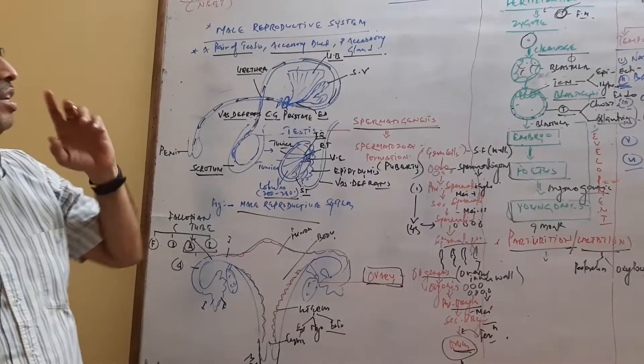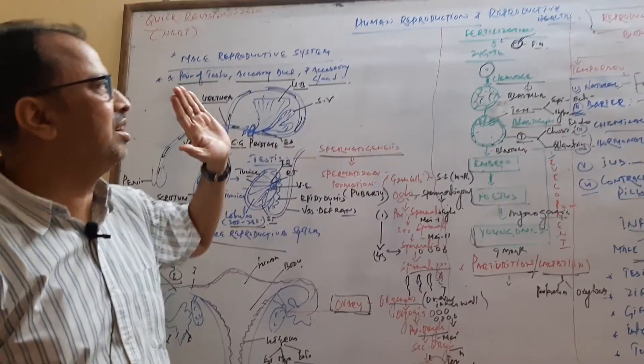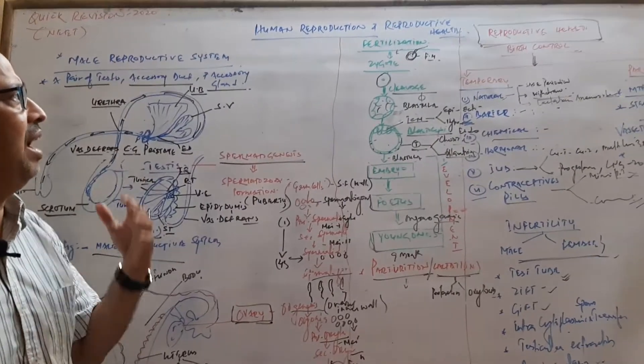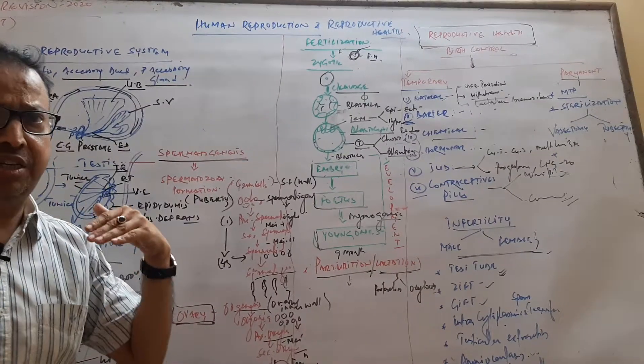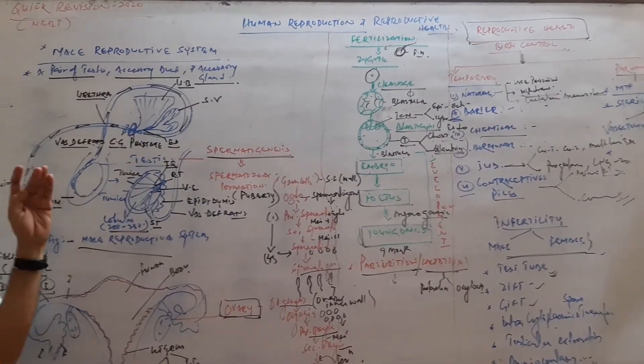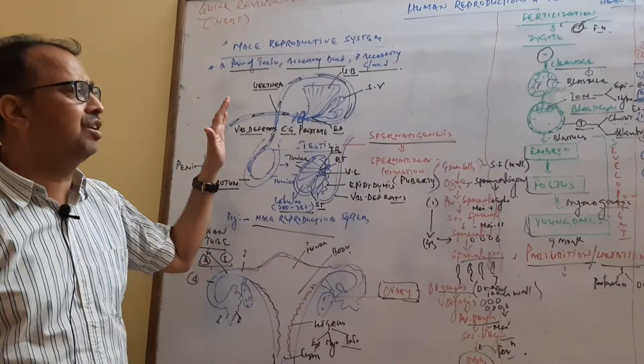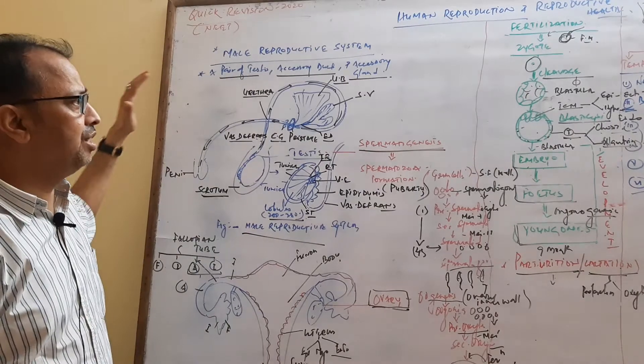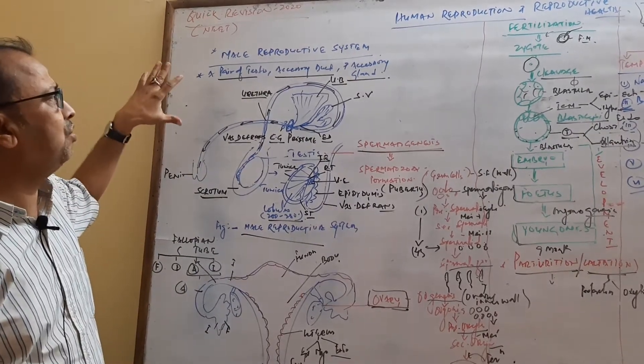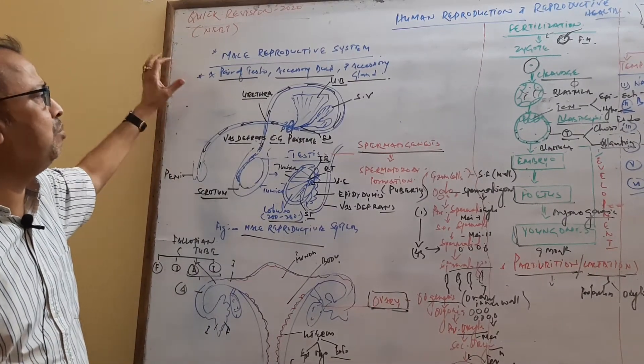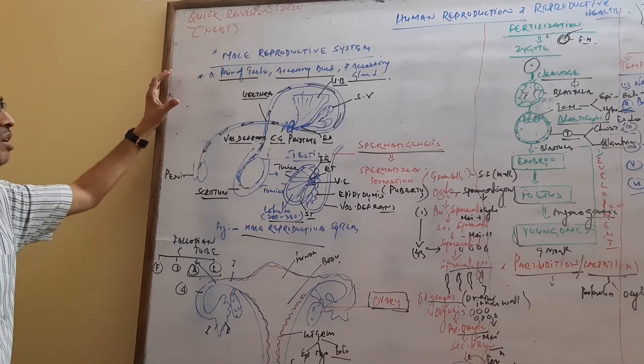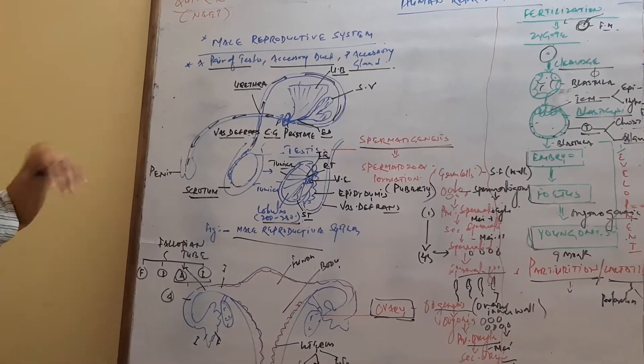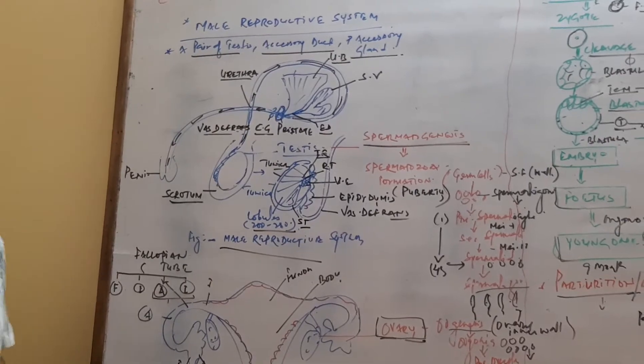Hello friend, now we are going to start the one-shot lecture of human reproduction and reproductive health. It is a complete lecture which is covered in 20 to 30 minutes. So be careful. Now we start with human reproduction, male reproductive system and female reproductive system.